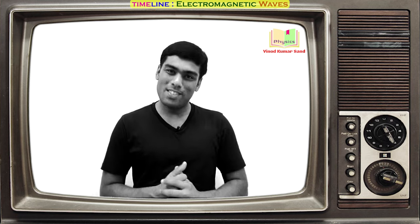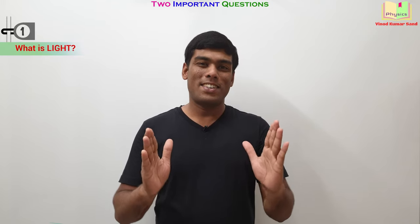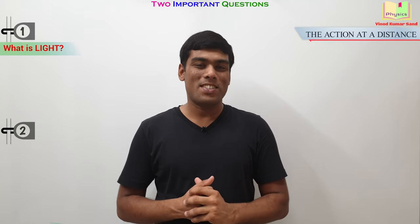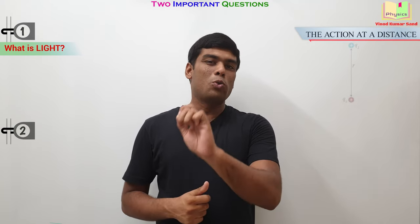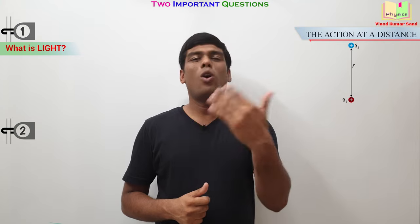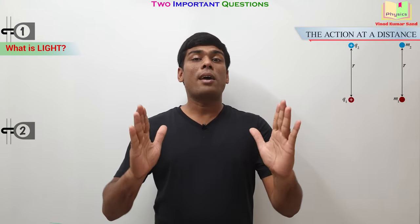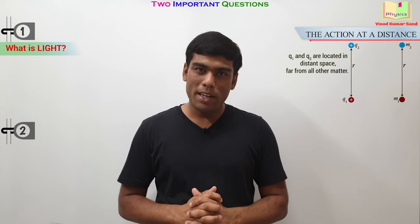But before that, let me ask you two brilliant questions which kept on puzzling the scientists for many centuries. The question number one, what is light? And the question number two, regarding the action at a distance. Suppose there are two point charges Q1 and Q2 or two point masses M1 and M2. They are kept far away from all other matter.